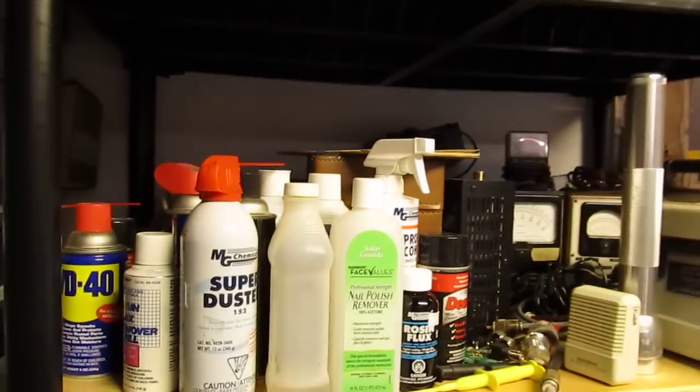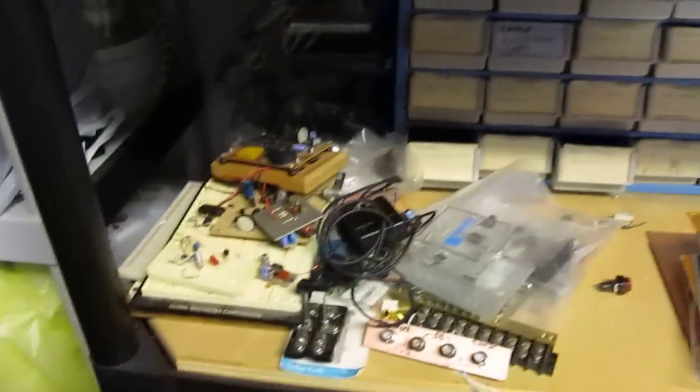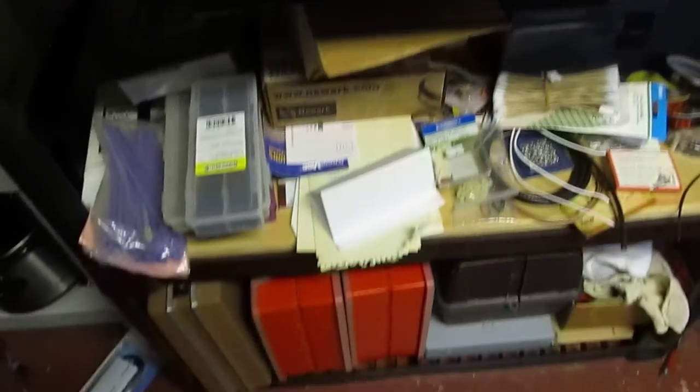This shelf here is mainly chemical storage and a couple of other pieces of test equipment. Grid dip meter I did a video on a few months ago, little transistor checkers here and in the brown box over there, and kind of parts storage and a boneyard for bits and pieces. All these little storage bins have components and parts in them.